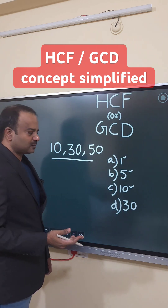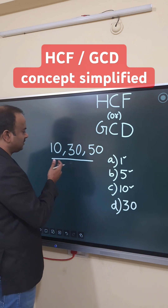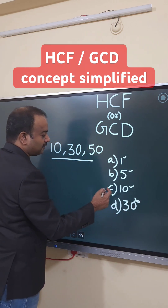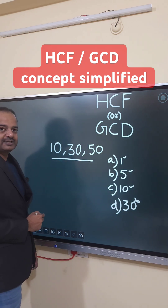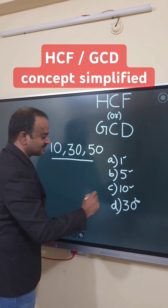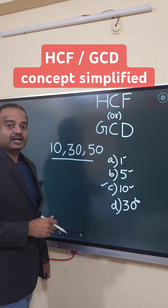But is it the highest one? Let's check 30. 30 will not divide 10, so this is ruled out. Therefore, 10 is the highest number that divides all three numbers — so 10 is the highest common factor, or GCD.